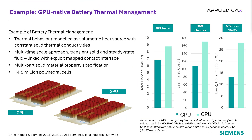Here is a second example of using GPU computation for battery thermal management. This case is strictly conjugate heat transfer using a multi-timescale approach with a transient solid solution and mapped steady-state flow solutions. This is a larger model coming in at 14.5 million cells. We can compare the performance time running it on 512 AMD CPUs versus 4 NVIDIA A100 GPU cards. With these four cards, we cut the solution time by 20%, cut the cost by 36%, and consume half the energy.